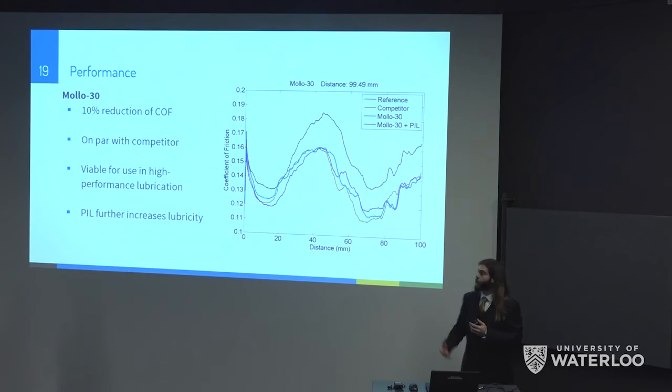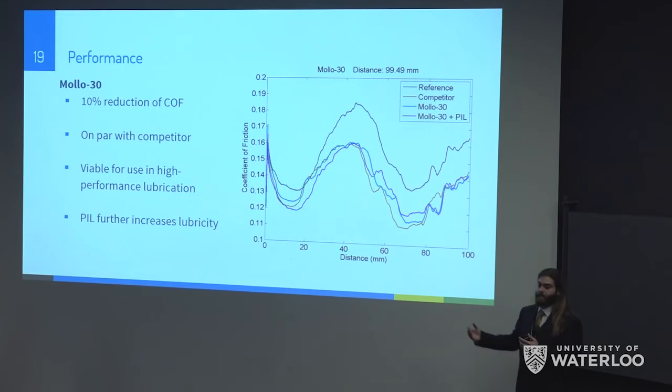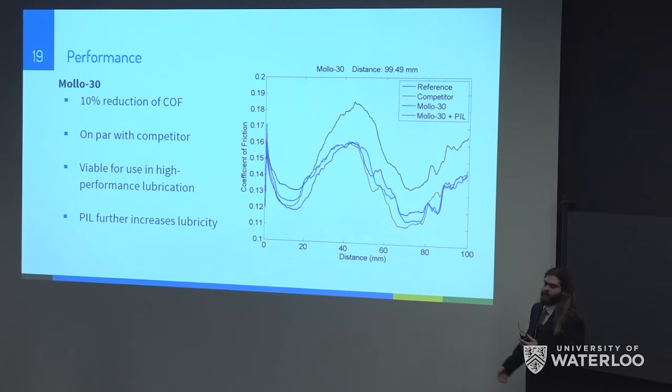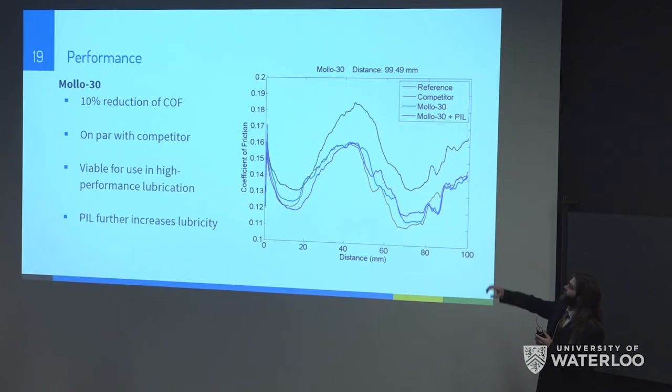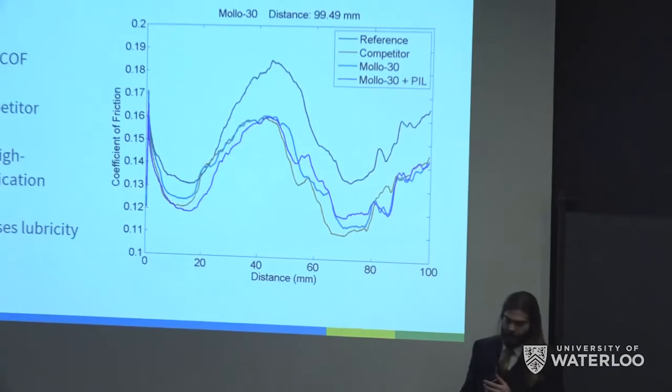For the MALDO 30 product, a similar comparison was done with the reference, competitor, MALDO 30, and MALDO 30 plus PIL. There was a 10% reduction in coefficient of friction, again fairly close to the competitor, showing viability for high performance lubrication. Importantly, the PIL was able to further reduce the coefficient of friction and synergized properly with the MoS₂, which is very apparent in the beginning section where the purple line — MALDO 30 with PIL — is significantly lower than the rest at low sliding distances.